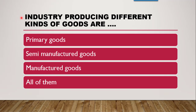The next question is: industries producing different kinds of goods are — primary goods, semi-manufactured goods, manufactured goods, or all of them. The correct answer is all of them. Primary goods are produced first; from primary goods, semi-manufactured goods can be produced; from semi-manufactured goods, manufactured goods can be produced. Manufactured goods can be either producer's goods or consumer's goods. Primary goods include raw materials such as wheat, rice, sugar cane for manufacturing sugar, and milk for manufacturing other goods.